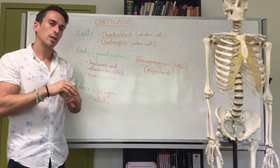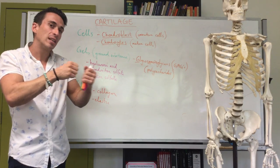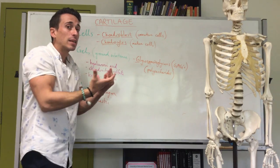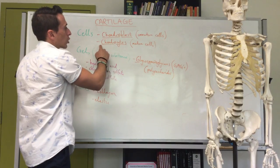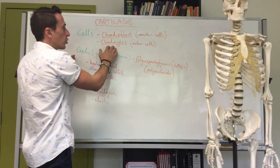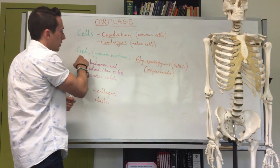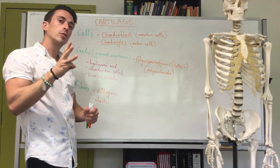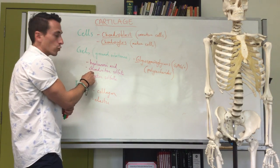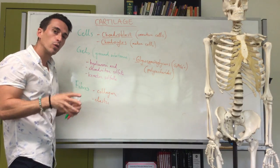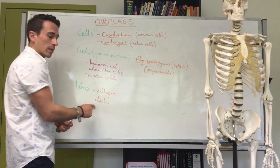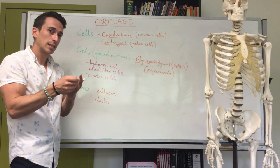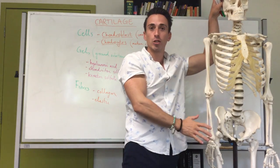Cartilage is made up of cells, gels, and fibers. The cells are chondroblasts, which secrete the gels and fibers, and chondrocytes, which are the mature chondroblasts embedded within the matrix. The gels — ground substance — are made up of glycosaminoglycans (GAGs): hyaluronic acid, chondroitin sulfate, and keratan sulfate. The major fibers embedded in this gel are collagen and elastic fibers. In the next video I'll talk about the three major types of cartilage — hyaline, elastic, and fibrocartilage — using our boy Frank.